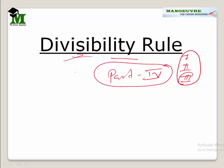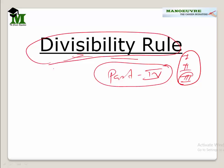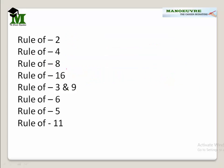Divisibility rules are very important — they will make your task easier when you come across questions. The rules I want to discuss are: rule of 2, rule of 4, rule of 8, rule of 16, rule of 3 and 9, rule of 5, rule of 6, and rule of 11. So be with me for a couple of minutes and I will discuss all these rules.